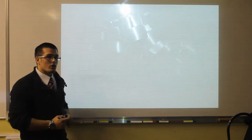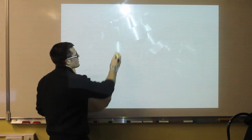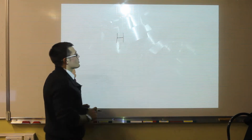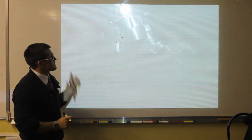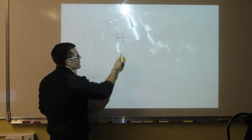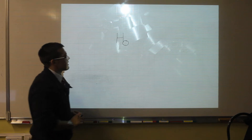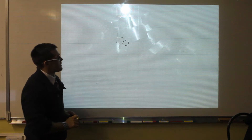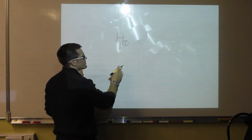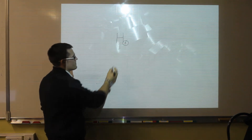Now before we start, there are some things we need to know. If we have an element in the periodic table in a chemical formula, for example, if we have H for hydrogen, if there is no number in the bottom right-hand corner of it, that means that we only have one of that atom. So it's an imaginary one — we don't write it when there's only one atom.